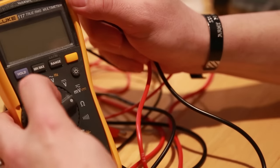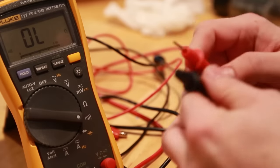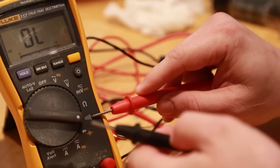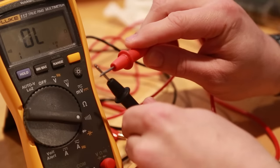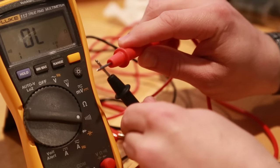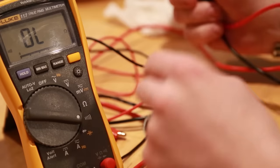If you put your multimeter on the continuity mode, which has this little sound wave symbol, what that means is when you touch the two probes together it makes a noise, meaning that it detects the electricity is flowing.